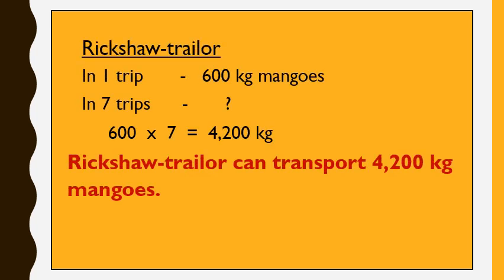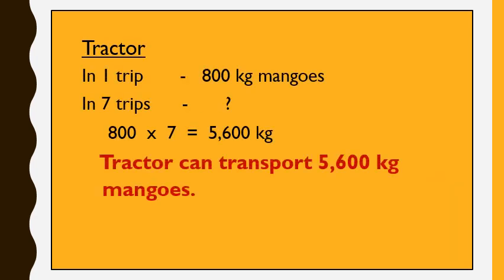In one trip, a rickshaw trailer can transport 600 kg of mangoes at 12 km per hour. In 7 trips, using cross multiply and divide, we get 4,200 kg. So, the rickshaw trailer can transport 4,200 kg of mangoes in 7 trips. In one trip, a tractor can transport 800 kg of mangoes at 20 km per hour. In 7 trips, we multiply 800 by 7 and divide by 1, giving us 5,600 kg. So, a tractor can transport 5,600 kg of mangoes in 7 trips.